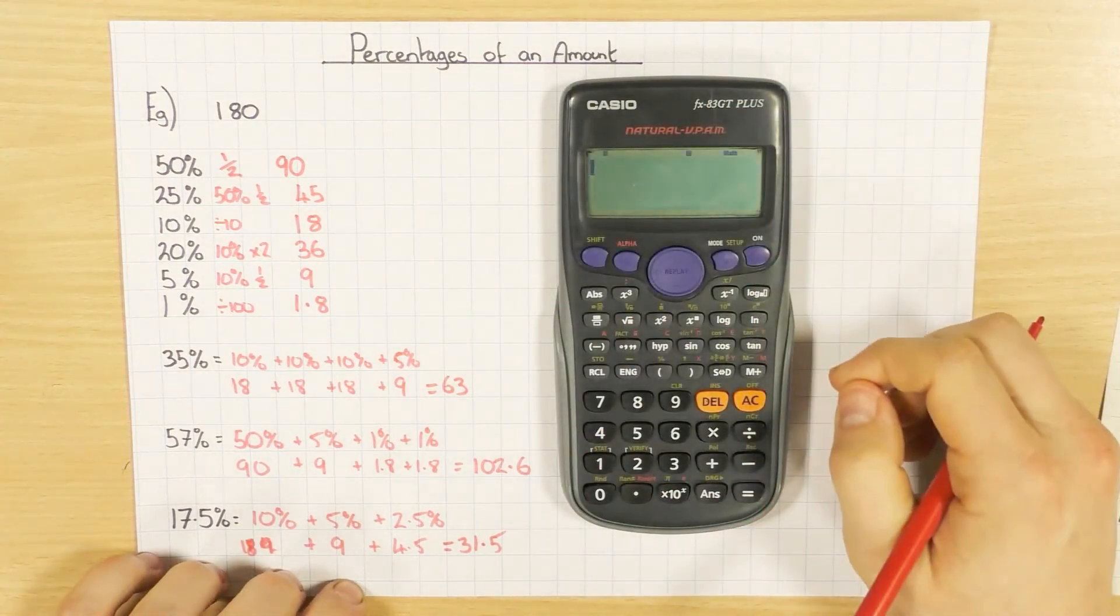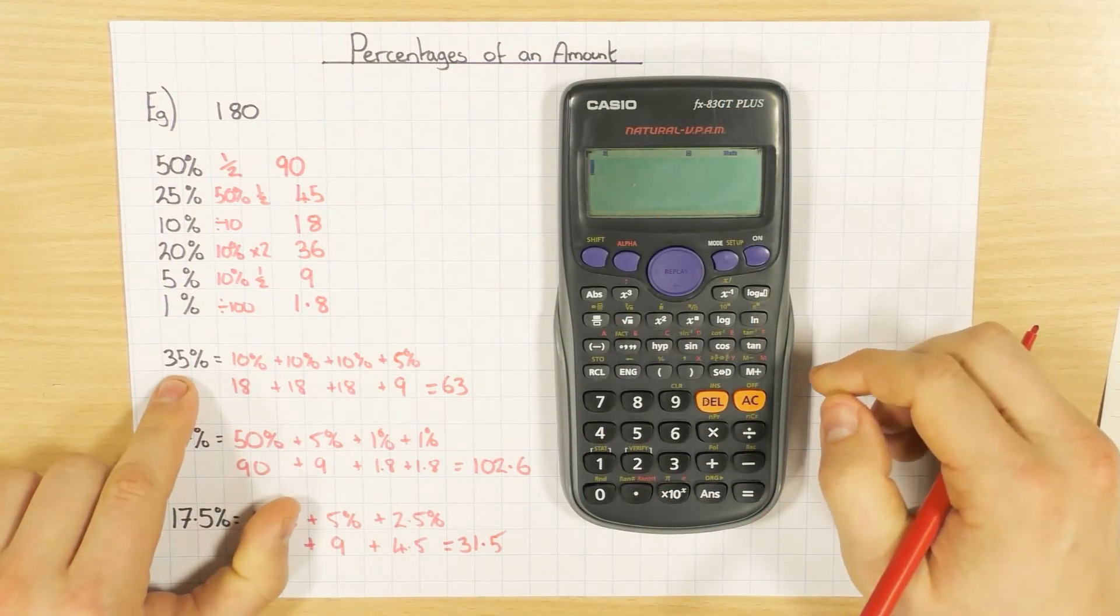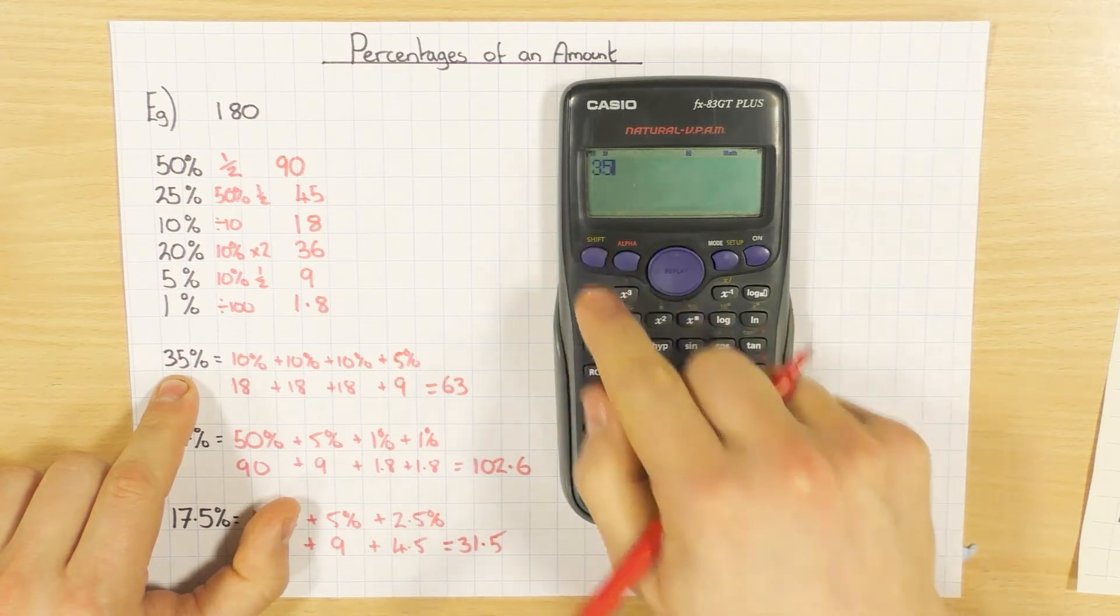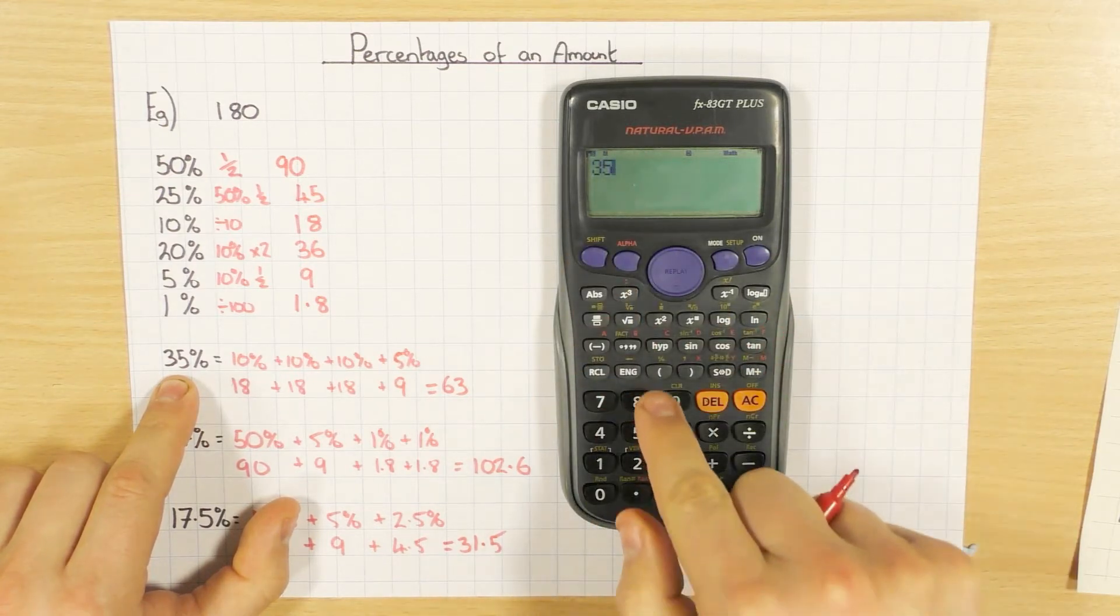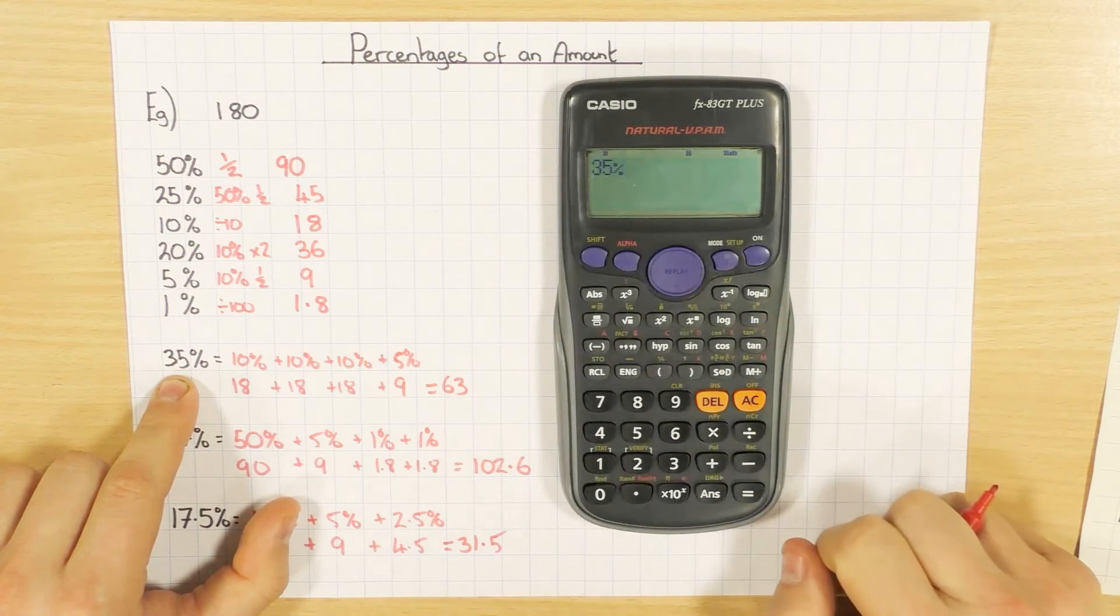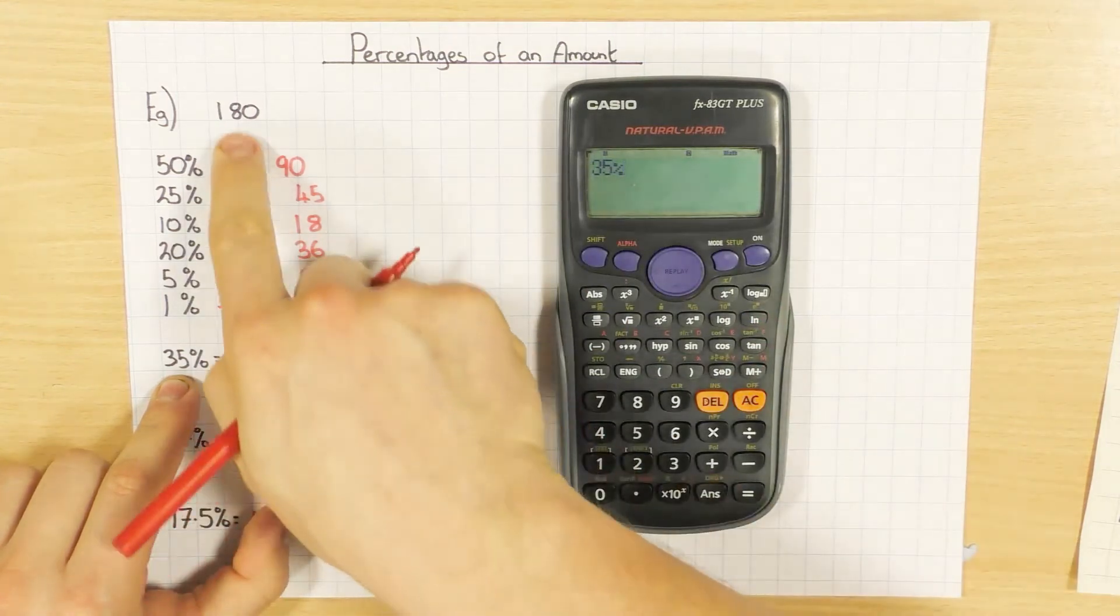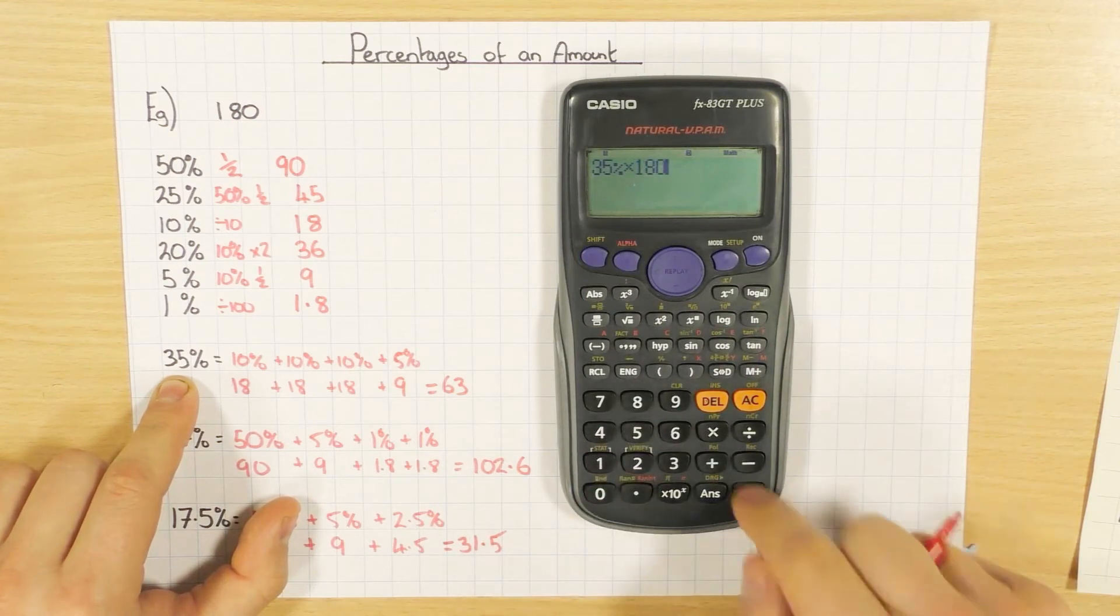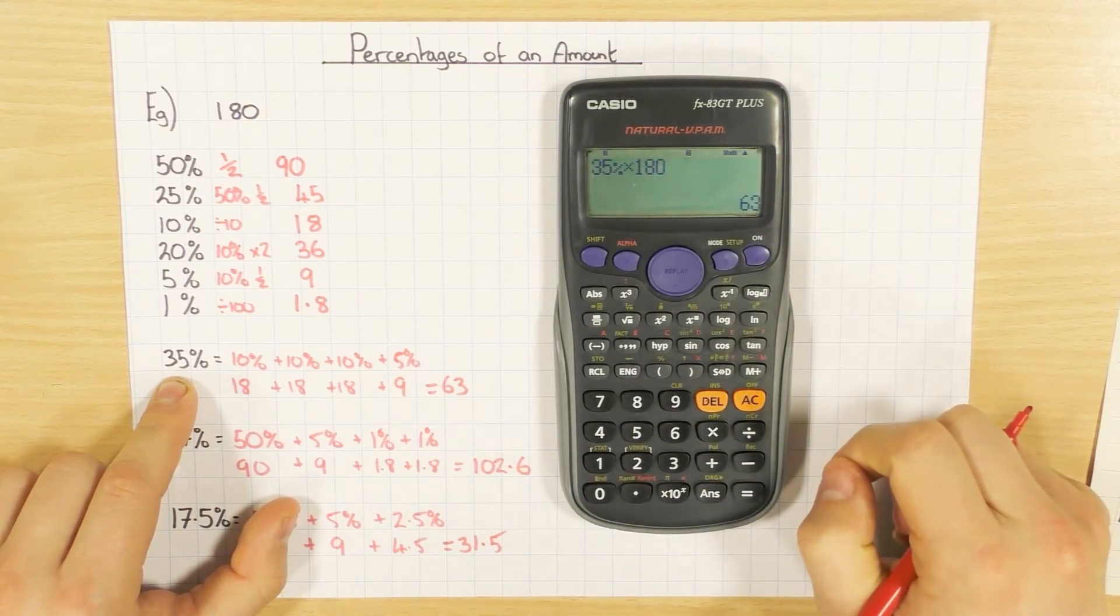Now with a calculator, it's really easy. If you want to find 35%, we do 35, press shift, and on the left bracket there you might see a little percentage in yellow. Press that and you'll have 35%. So to find 35% of 180, you type in 35% and we times 180. As you see, we get 63.